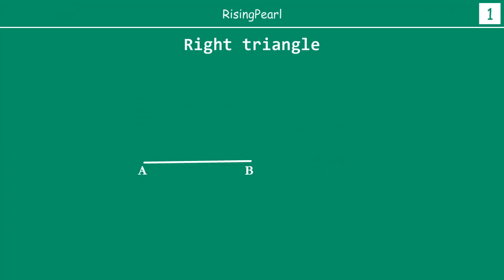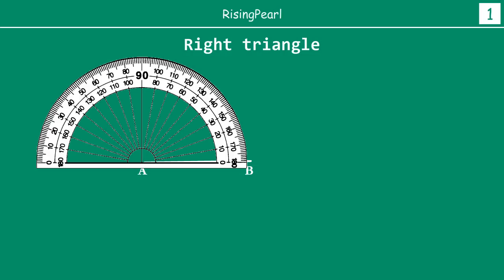Here, friends, I have drawn a simple line segment AB. What we will do is put a protractor at point A and draw a line AC. I have chosen a random angle — 25 degrees, as you can see here, right in between 20 and 30.